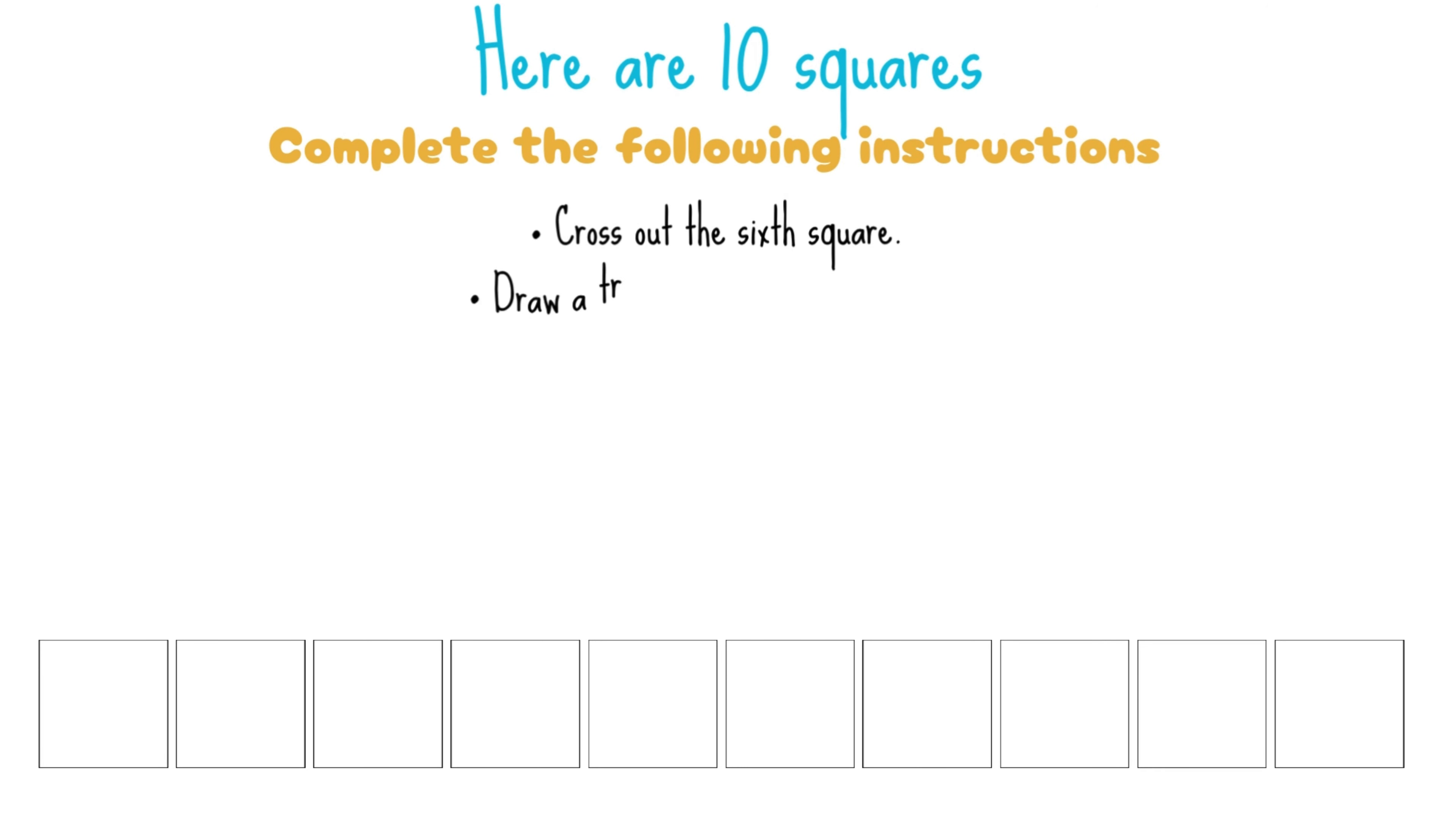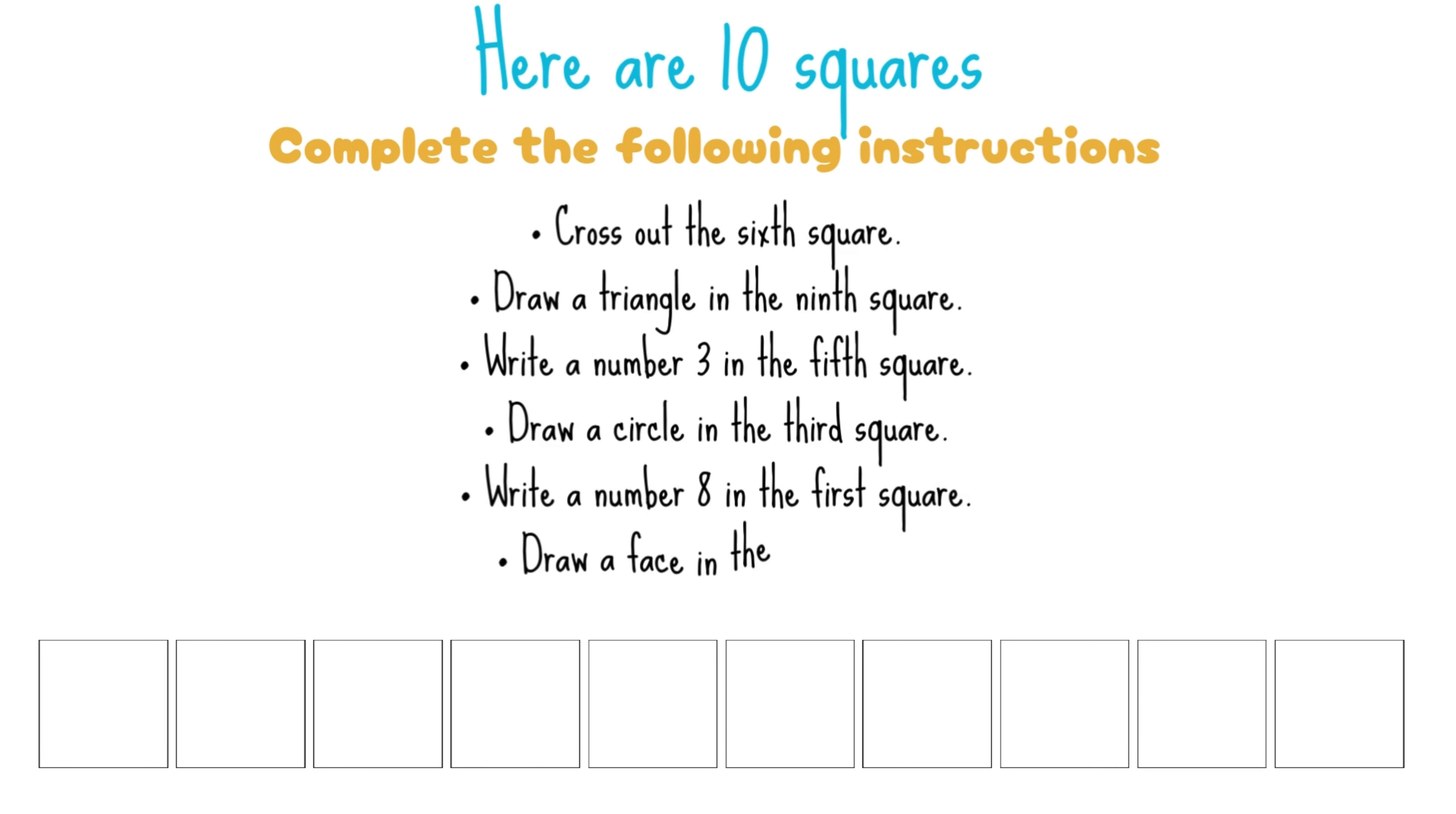Here are ten squares. Complete the following instructions. Cross out the sixth square. Draw a triangle in the ninth square. Write a number three in the fifth square. Draw a circle in the third square. Write a number eight in the first square. Draw a face in the last square.